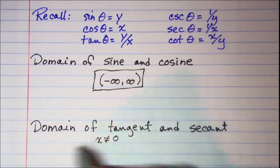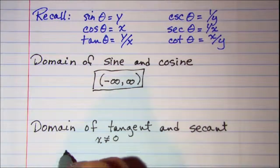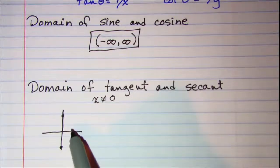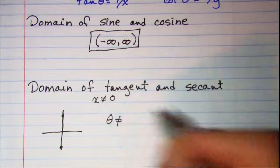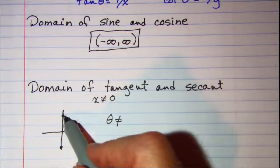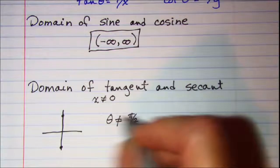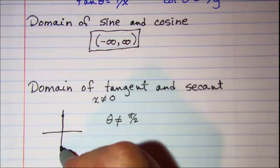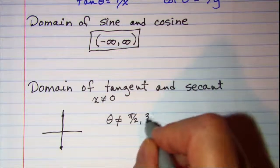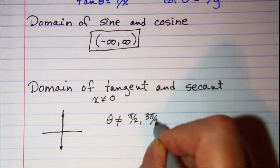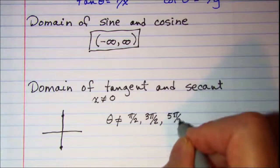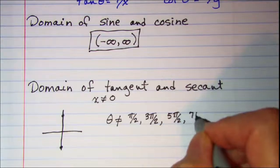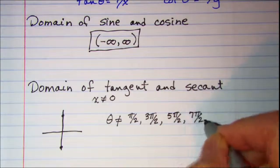So if x is not equal to 0, then theta cannot equal pi over 2, 3 pi over 2, 5 pi over 2, 7 pi over 2, and so on.